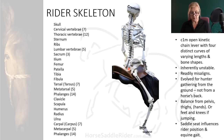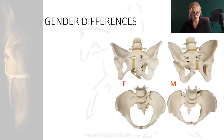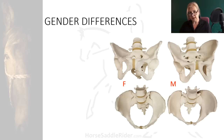Saddle seat influences rider position and in turn equine gait, although much more can be done for the rider to help them find their core spinal stabilising system. The most important skeletal component involved with rider equitation is the pelvis, and riders should not look to the saddle to merely provide them with a comfortable seat. The performance rider requires much more as they seek to achieve competence in equitation.